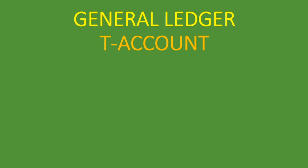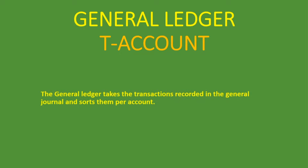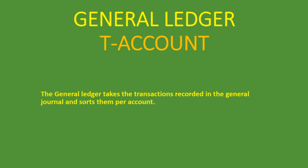So, what is a general ledger? Well, a general ledger takes the transactions recorded and organizes them per account. Remember when we do the general journal, we're doing transactions as they take place — we're not doing it for a specific account, just recording them as they happen. But when we come to the general ledger, it's for specific accounts.